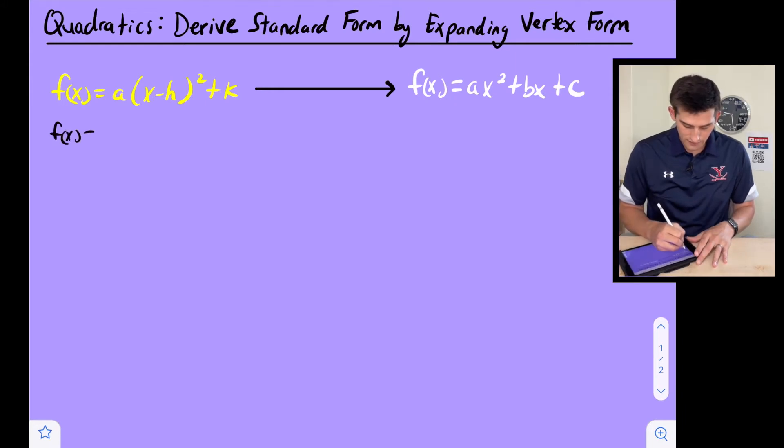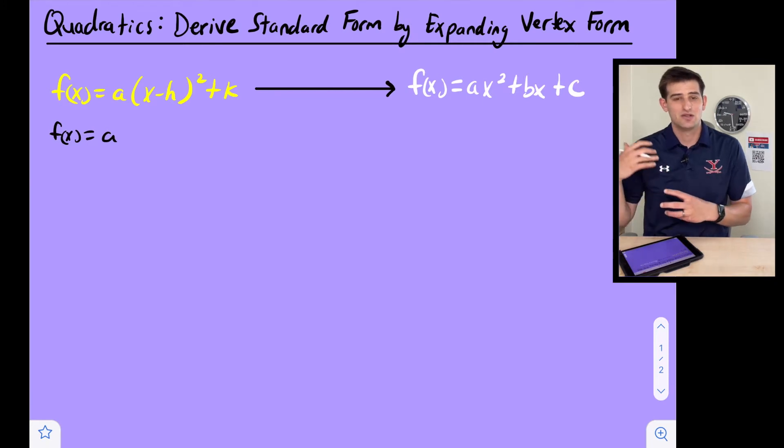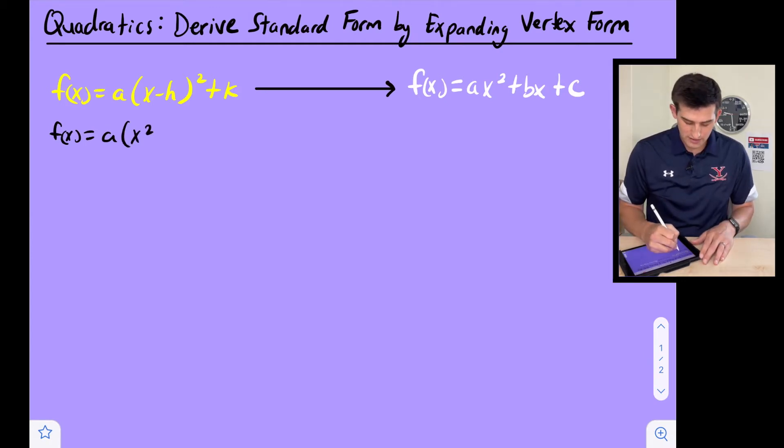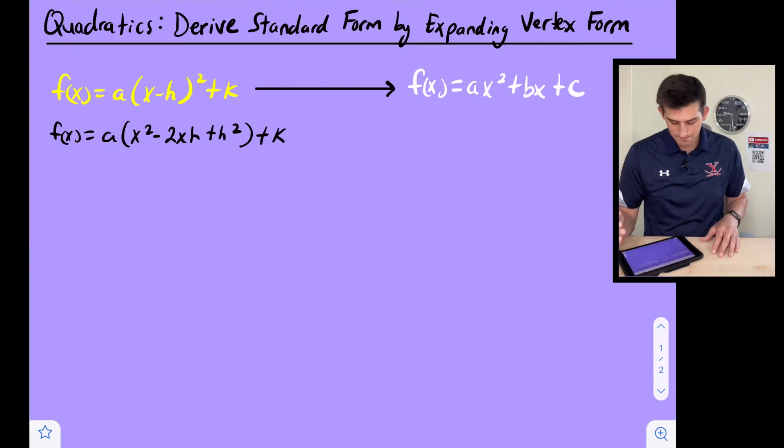We're going to say f(x) is equal to a, and we can expand (x - h)² because that's like (x - h) times (x - h). So you can foil that, or if you remember the pattern here, this is the square of a binomial. So this becomes x² - 2xh + h², and then we have +k on the outside.